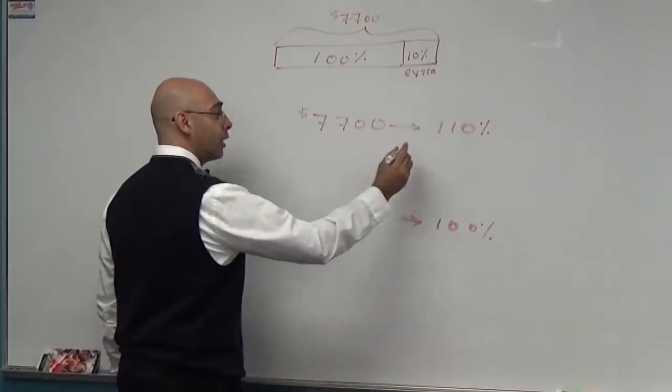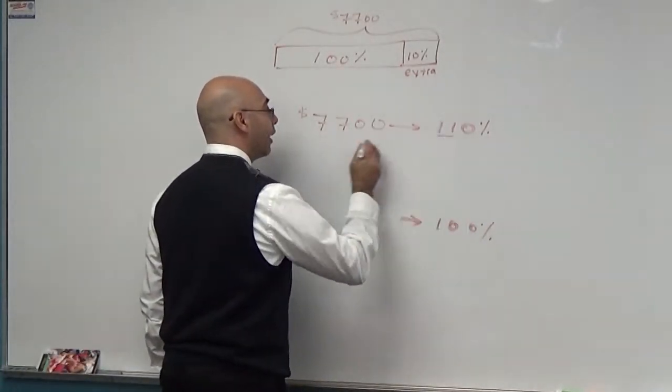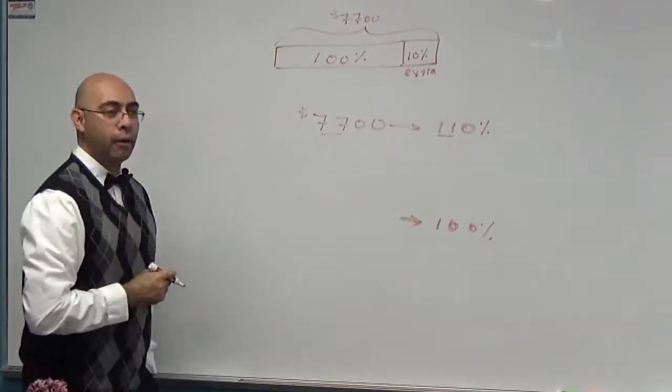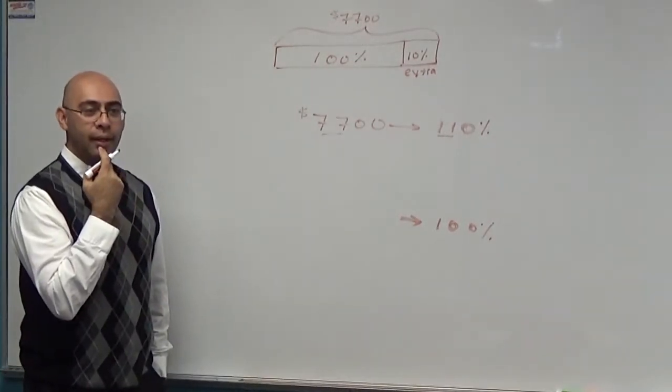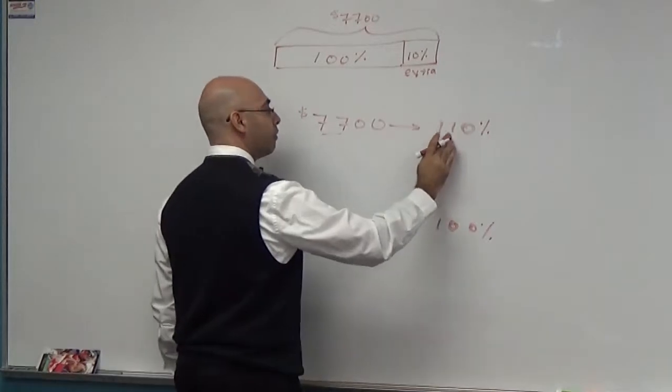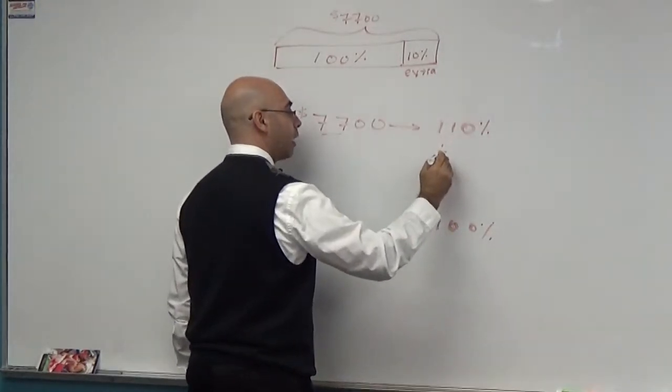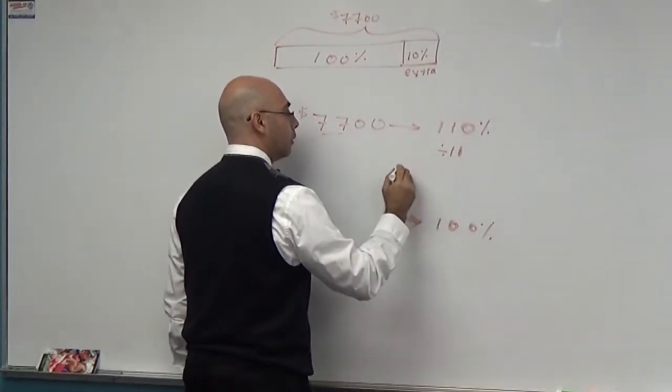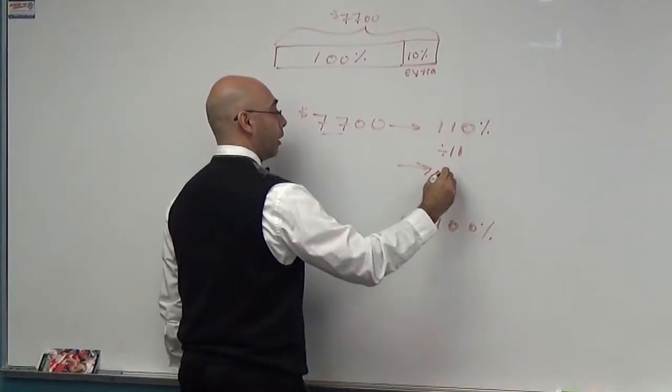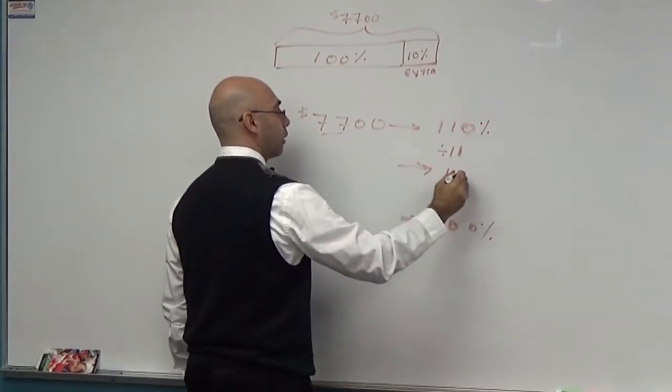You're going to divide. I look at this and see an 11 here and a 77 there. What can you divide those by? 11. I can divide this by 11. So I'm going to divide this side by 11.